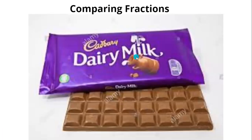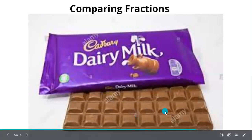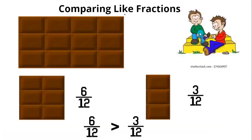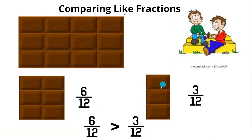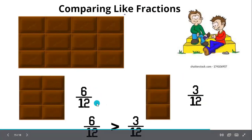Comparing fractions: I have a dairy milk chocolate and I am going to divide it among my brothers. The whole chocolate is first divided into 12 parts. My first brother gets 6 parts out of 12, that is 6/12, and my younger brother gets 3 parts out of 12, that is 3/12. So who got more? The denominators are the same, and the numerator 6 is bigger, so 6/12 is greater than 3/12.